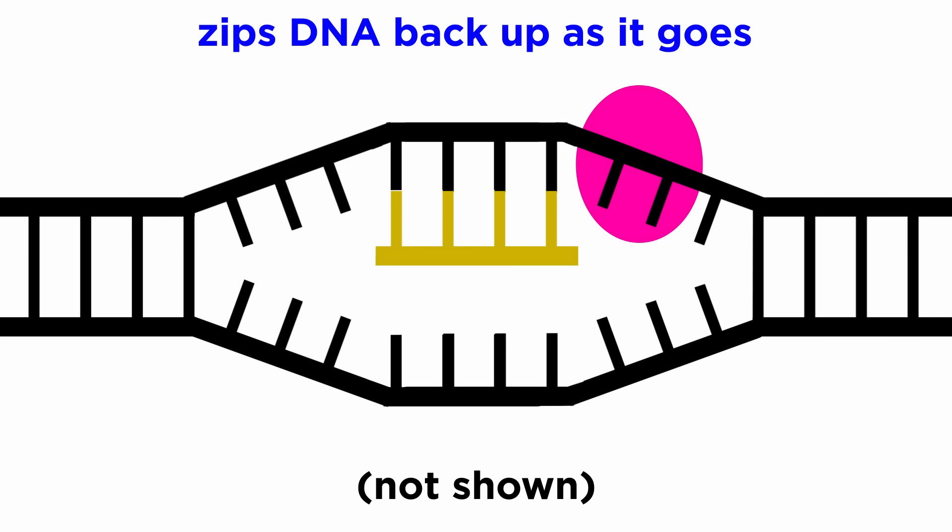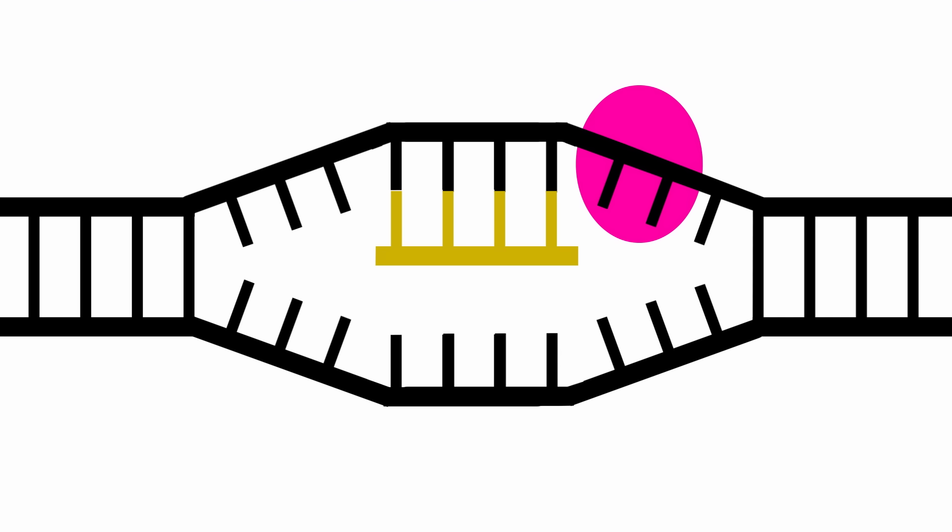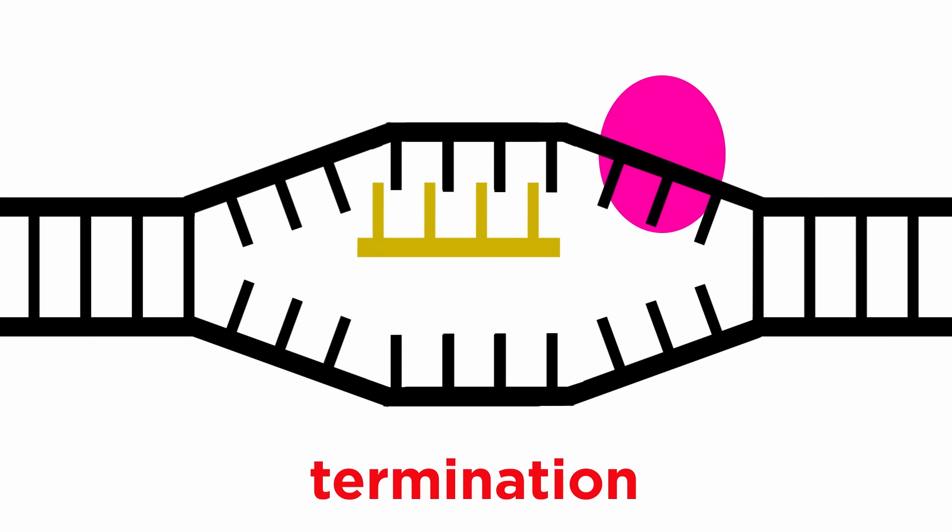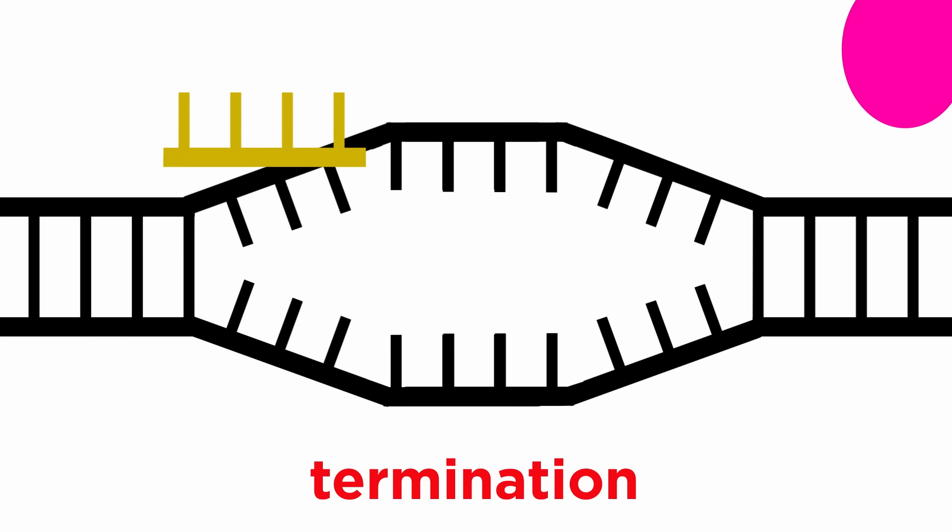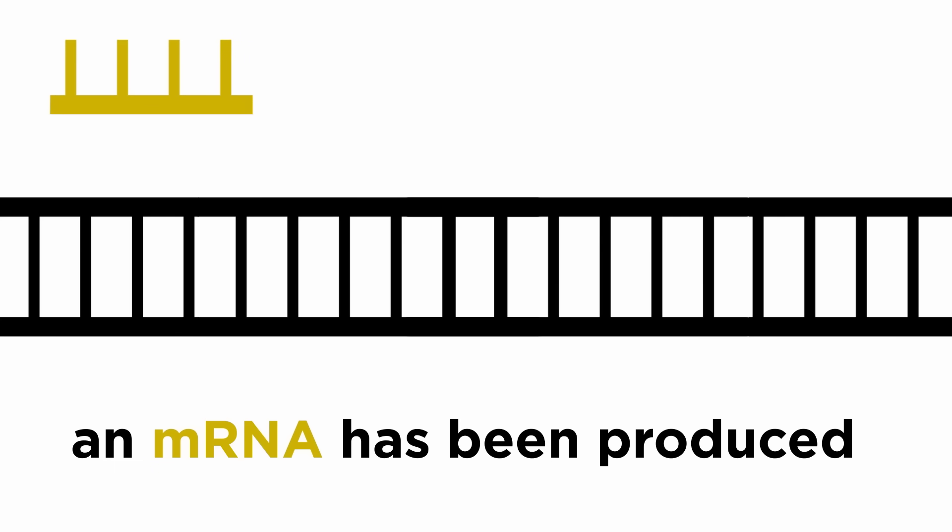Unlike replication, RNA polymerase zips DNA back up as it goes, keeping only 10 to 20 bases exposed at a time. Once RNA polymerase reaches the end of the gene, termination occurs. The enzyme detaches from the gene and the DNA is returned to its original state, but we have produced an mRNA.